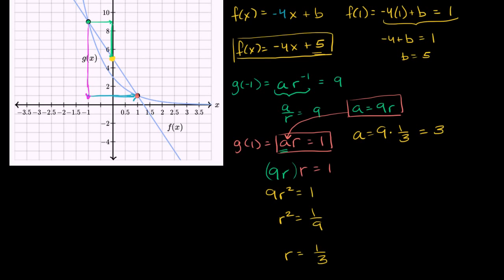So our exponential function could be written as g(x) = 3(1/3)^x. Or you could even write it like this, because order of operations would imply that you do the exponential first. I'll write it like this just to make it clear, this isn't just 1 to the third power, this is (1/3) to the x power.